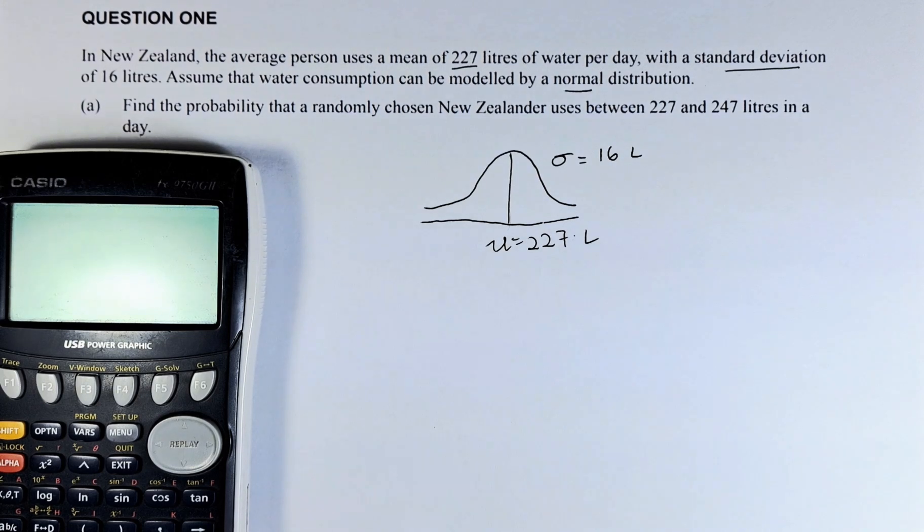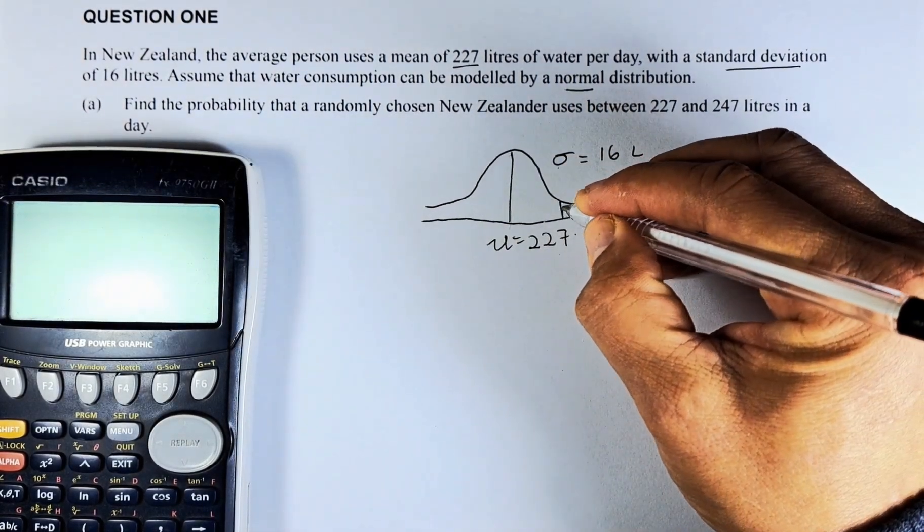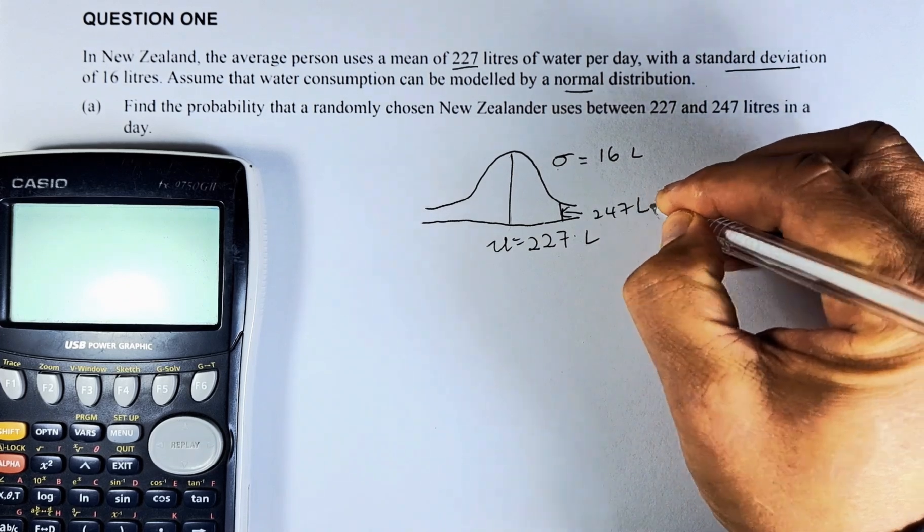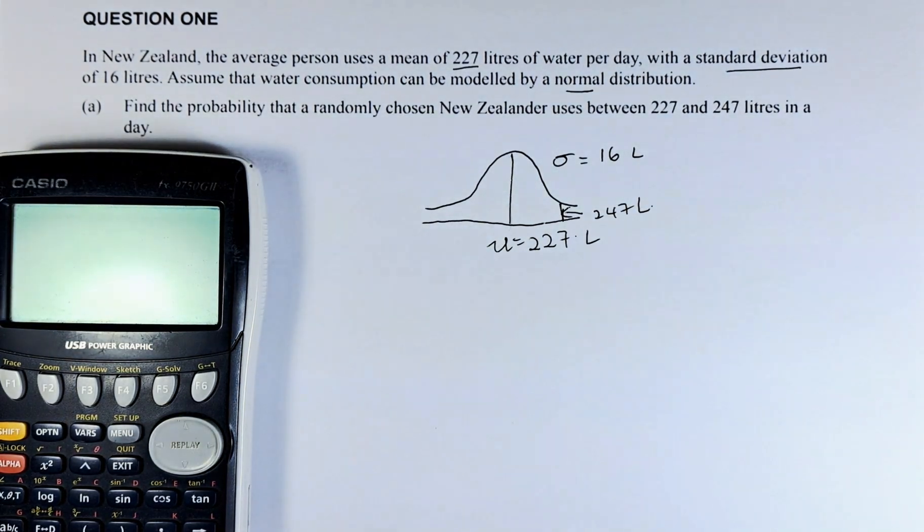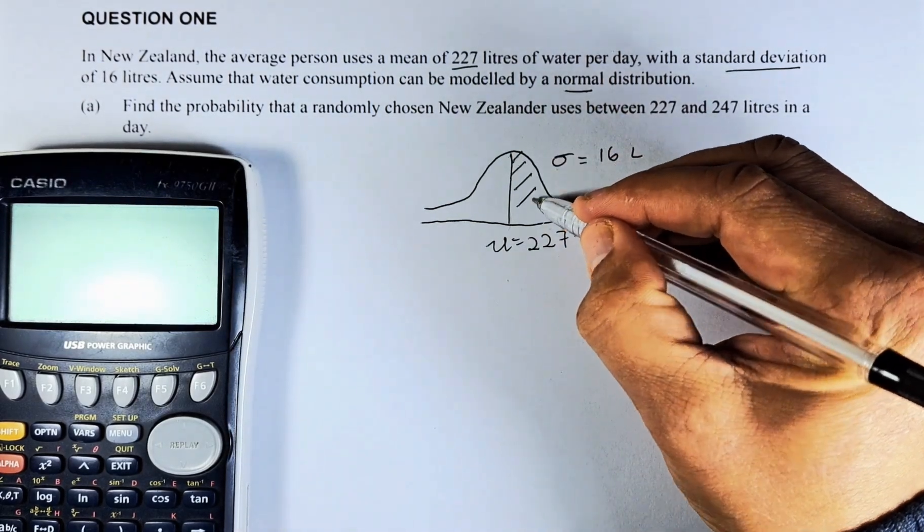So the question is, find the probability that the randomly chosen New Zealander used between 227 and 247. If the mean is 227, 247 is going to be here. We are going to put there 247 litres, and we are going to find the probability between 227 and 247. And now we are looking at this area.